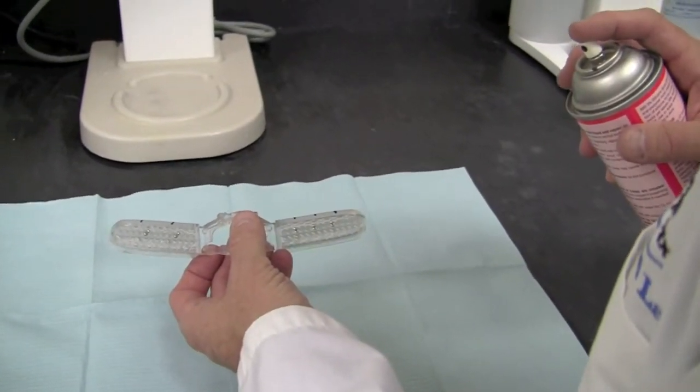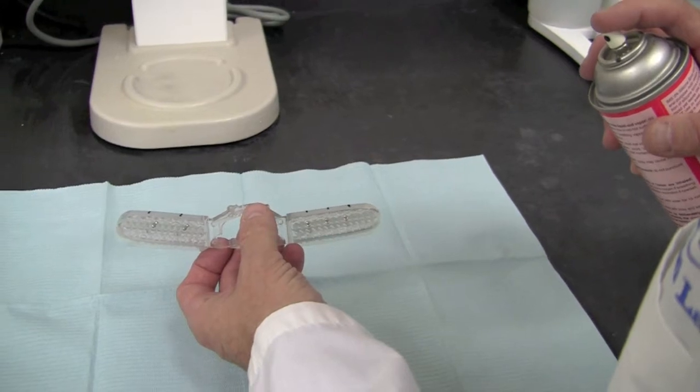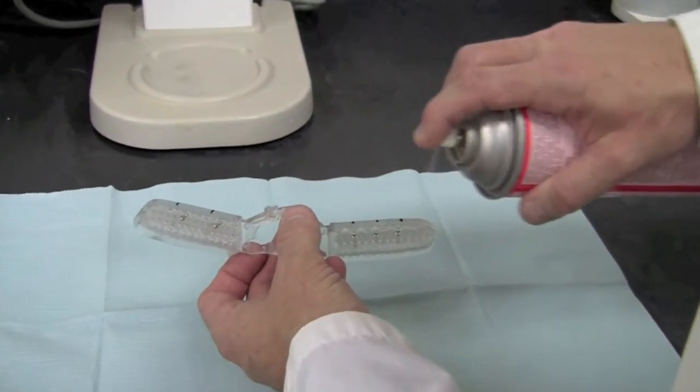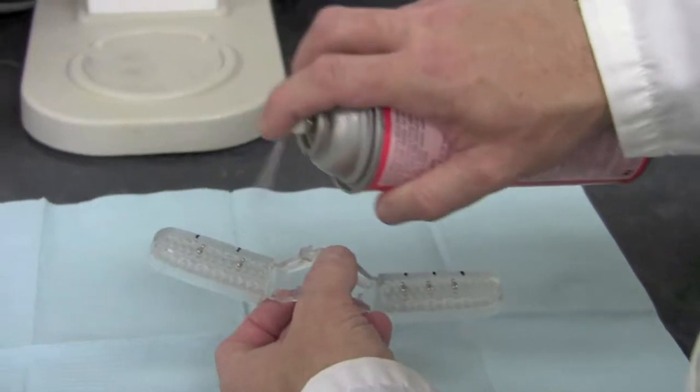Now we're going to spray both sections of the articulator with silicone release agent. Everywhere that stone will be contacting, just a light coating of silicone spray.